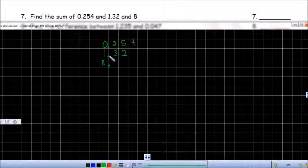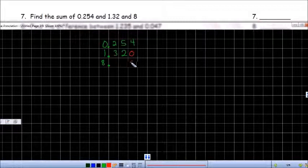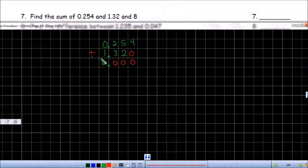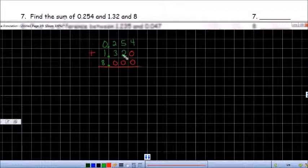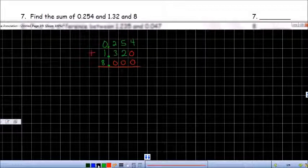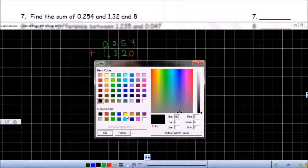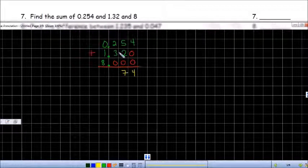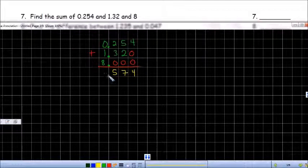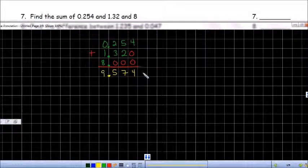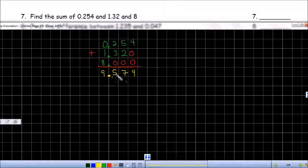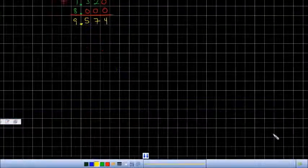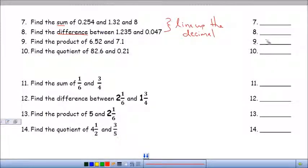Now that we've lined up the decimals, we need to make sure you fill in any missing zeros. So now that we fill in any missing zeros, we can go ahead and add. And because the word is sum, we're going to need to add. I'm going to get this yellow one. So 4 plus nothing is 4. 5 plus 2 is 7. 2 plus 3 is 5. Bring down the decimal. And 1 plus 8 is 9. So my answer is 9.574 or 9 and 574 thousandths. So that's what I'm going to write in my answer.